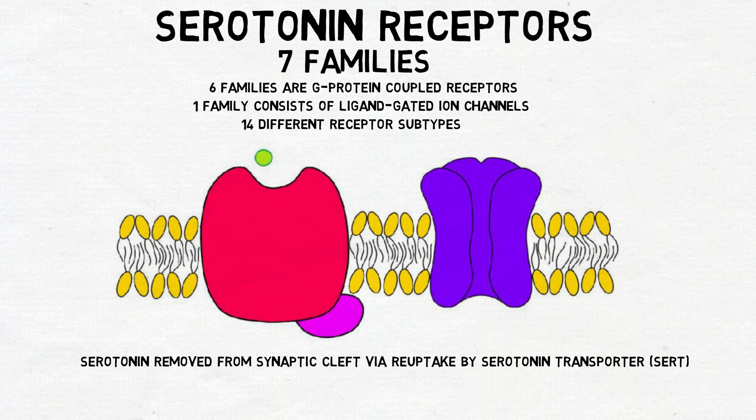In terms of function, serotonin is often linked to mood, in part due to the understanding that many antidepressants cause serotonin levels to rise. However, an attempt to define any neurotransmitter by one function is inevitably an oversimplification. In truth, serotonin's role in mood is very complex, and depression is not likely to be due to a simple serotonin deficiency. Additionally, serotonin is involved in a long list of functions other than mood, and in most cases its actual role in these functions is still not completely understood.